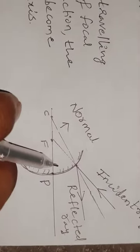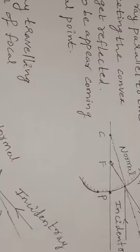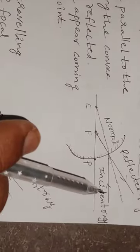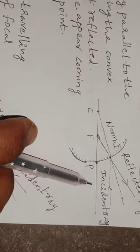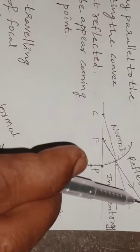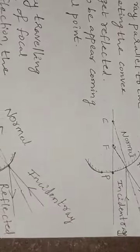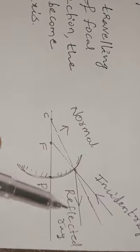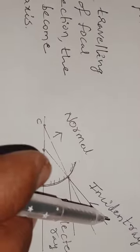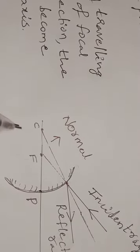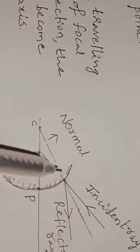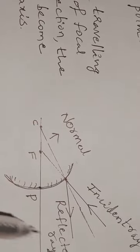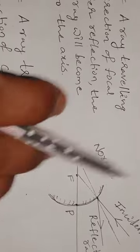Rule 2 is the converse of Rule 1. In Rule 1, the incident ray moves parallel to the principal axis and the reflected ray appears to come from the focal point. Here in Rule 2, the incident ray moves towards the focal point and the reflected ray moves parallel to the principal axis. So this is the converse of Rule 1.